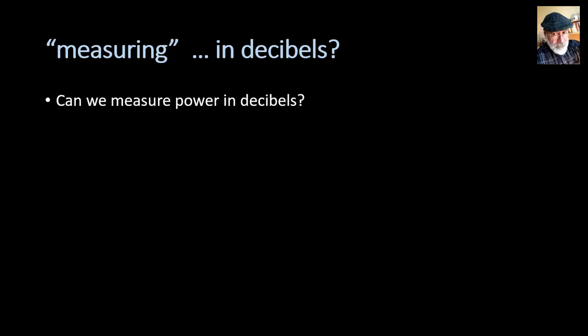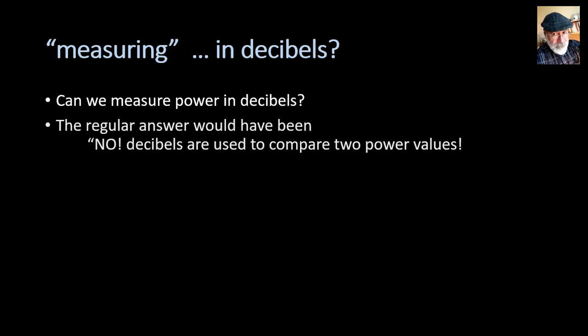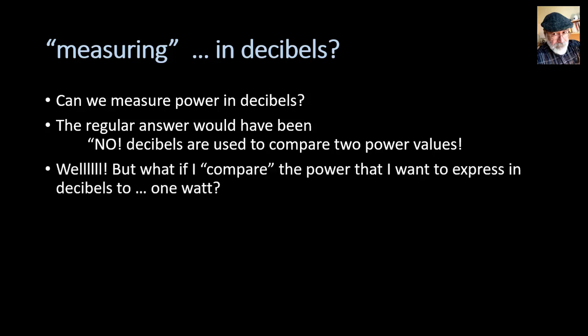Can we measure using decibels absolutely? This idea of measuring gains in decibels led people to ask: can we express a power, voltage, or current by itself in decibels? Decibels compare two power values — but if we compare the power we want to describe to a reference power of 1 watt, we can express it in decibels. This unit is called the decibel-watt (dBW). Similarly, if the power is very small, we use the decibel-milliwatt (dBm), comparing to 1 milliwatt using the same formula.